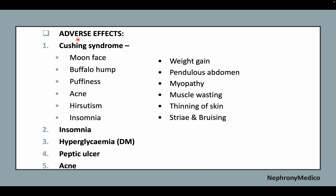Adverse effects: glucocorticoids can lead to Cushing syndrome, which presents as moon face, buffalo hump, puffiness, acne, hirsutism, insomnia, weight gain, pendulous abdomen, myopathy, muscle wasting, thinning of the skin, striae, and bruising. Hyperglycemia, peptic ulcer, and acne may also be seen.